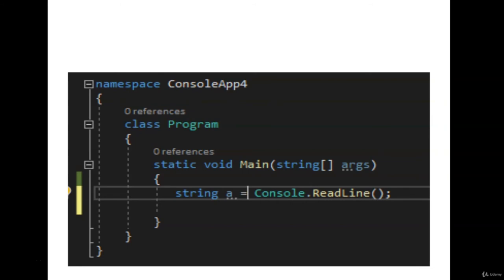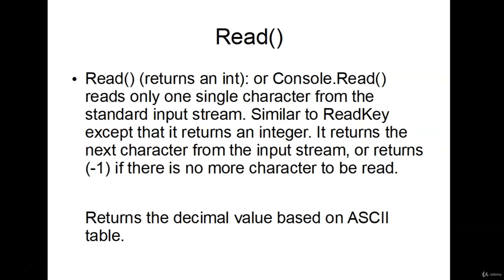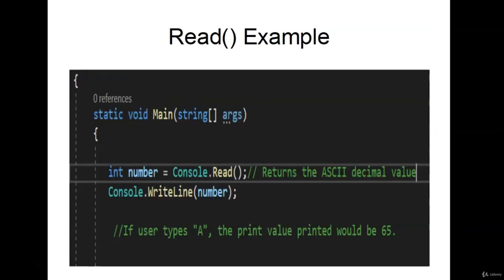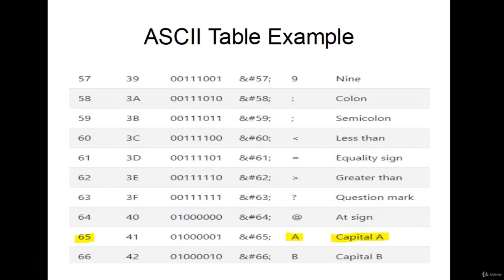The Read method returns an integer. If nothing is entered, it returns negative one. If anything is entered, it returns the decimal equivalent based on the ASCII table. For example, int number = Console.Read() — if the user enters capital A, it returns the decimal value from the ASCII table: 65. Capital A equals 65 on the ASCII table. You can Google this table to get familiar with it.